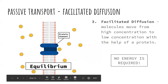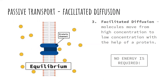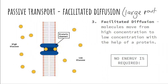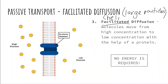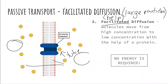The last kind of passive transport is facilitated diffusion. It's still passive transport, so no energy is required. We're still moving molecules from an area of high concentration to low concentration, but the difference is that in facilitated diffusion, large molecules need help getting through the membrane. Facilitated means help. These large molecules are not small, so they use a protein channel — a tube — to help them move from the area of high concentration to an area of low concentration.